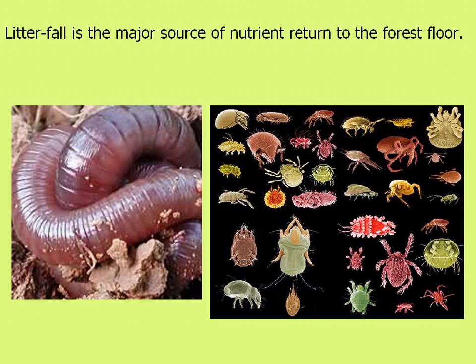In regards to nutrient cycling within forest soils, litter fall — trees, branches, and other dead or dying material on the forest floor — is the major source of nutrient return. A number of microorganisms take advantage of this food source. Earthworms are a major decomposer and consumer of detritus, and various mites and arthropods in the soil also break down decaying material.